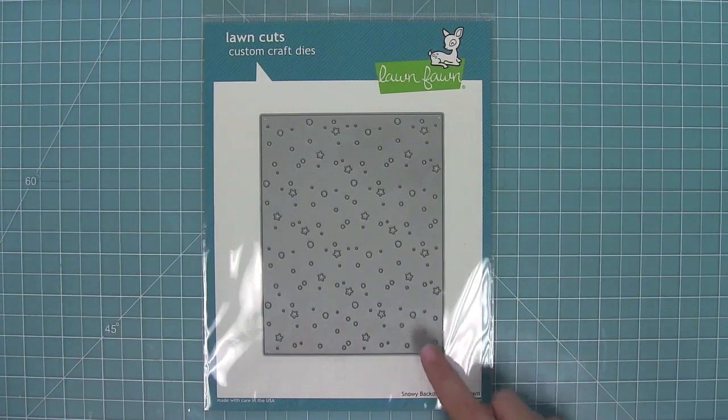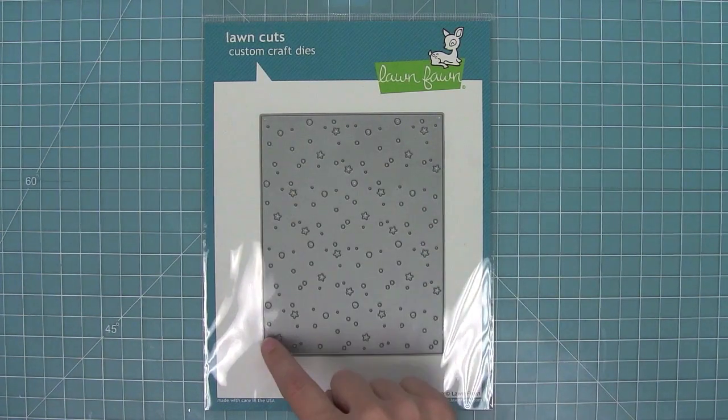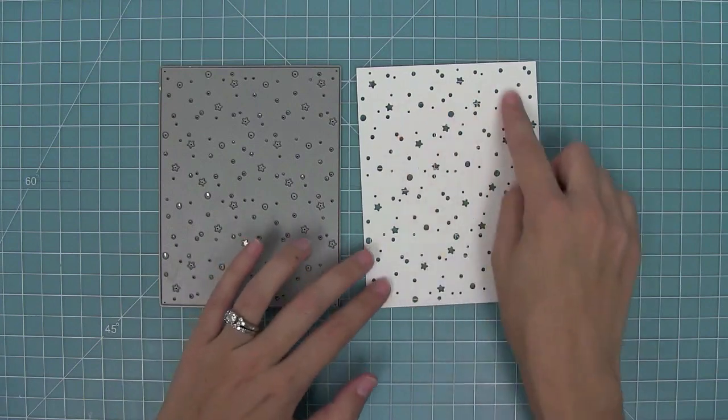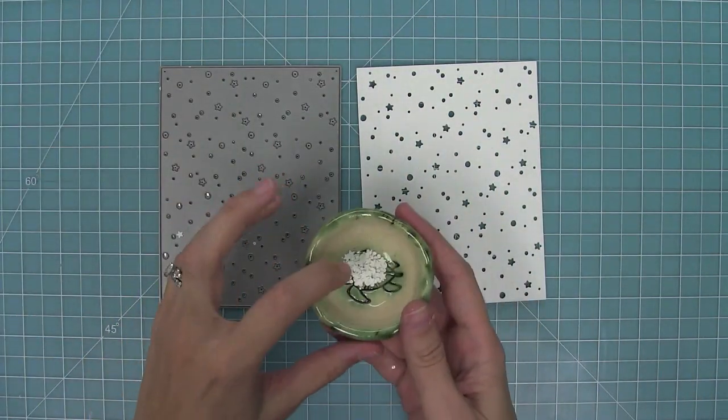Hello and welcome to another Lawn Fawn video. Today we are introducing the Snowy Backdrop Die and it is five and a half by four and a quarter, which means it is the size of a standard card. This is what it cuts out - this awesome starry snowy background.